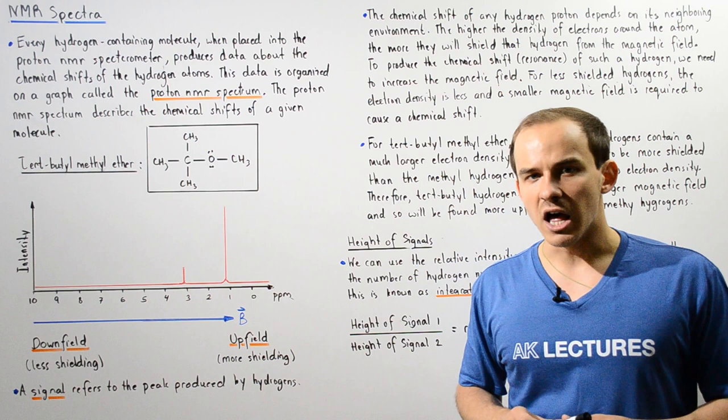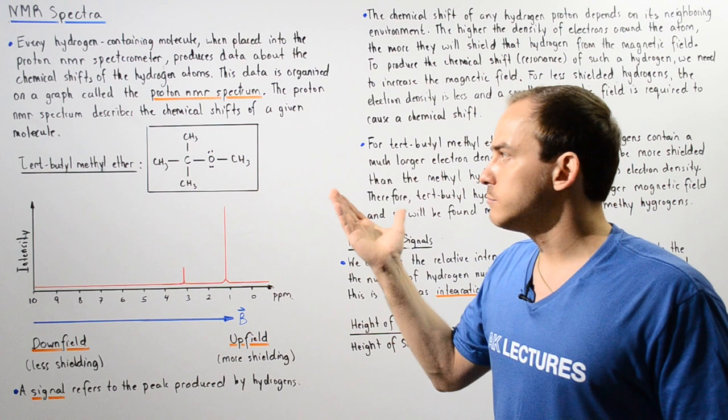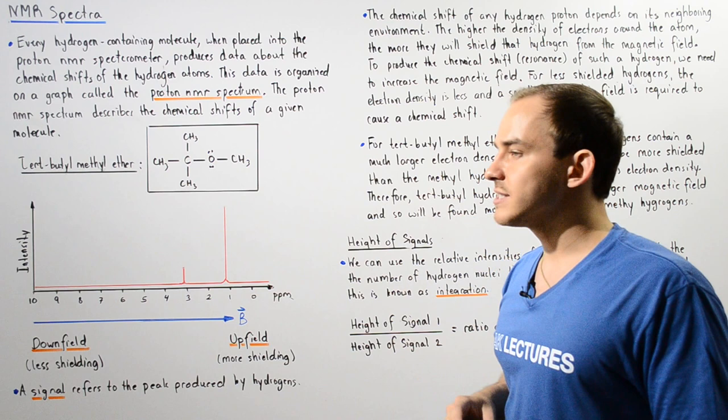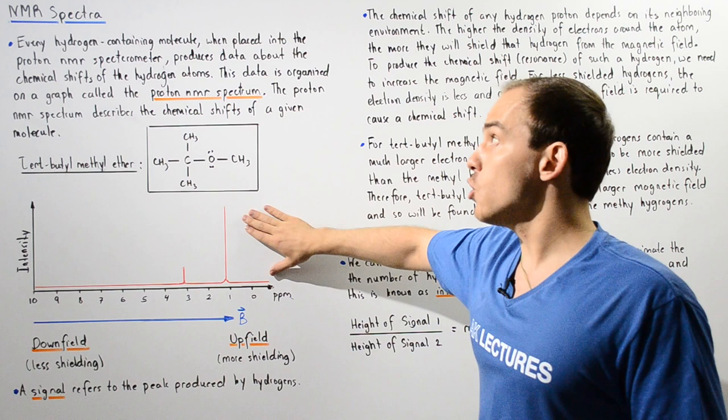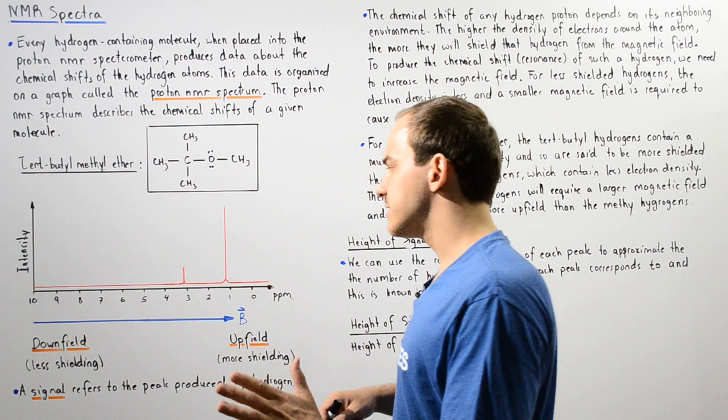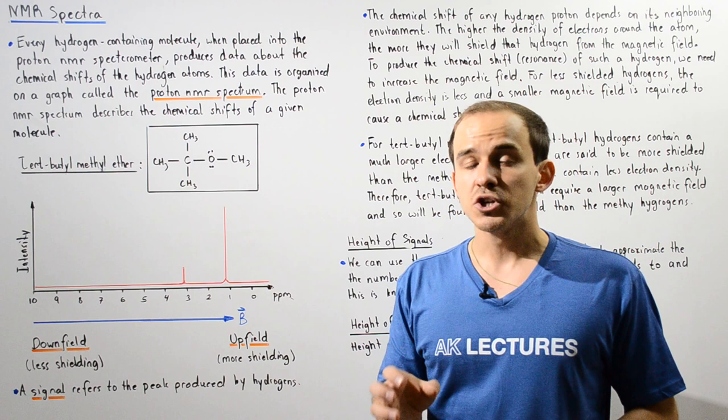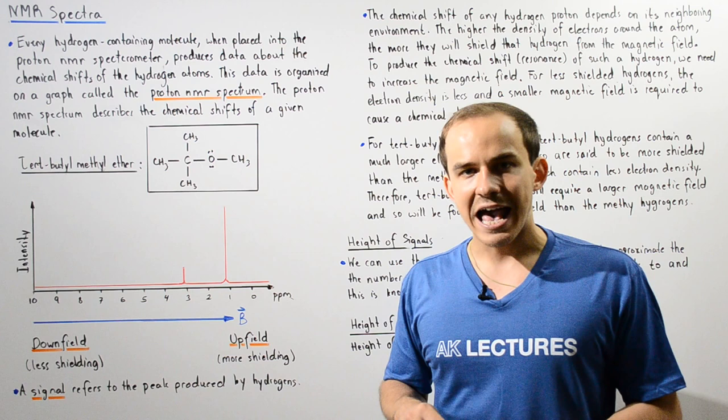Let's consider the tert-butyl methyl ether molecule. We take this molecule, place it inside the proton NMR spectrometer, and it gives us the following graph known as the proton NMR spectrum. Every proton NMR spectrum consists of an x- and y-axis. The x-axis describes the chemical shift value of our protons inside the hydrogen atoms, given in units known as ppm, or parts per million.